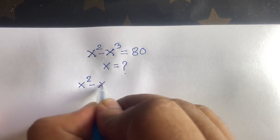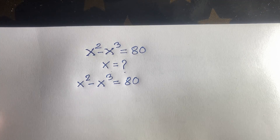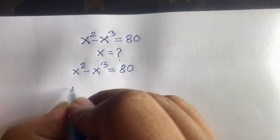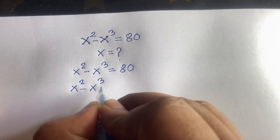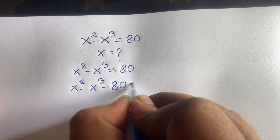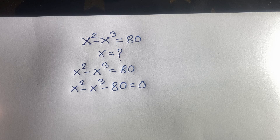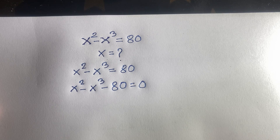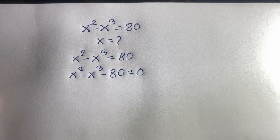Our question is x squared minus x cubed is equal to 80. I can say this equation becomes x squared minus x cubed minus 80 is equal to zero — I just subtract 80 from both sides.